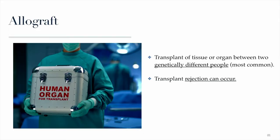The type of transplant you're most likely familiar with is called allografts. Allografts are transplants in which you have a donor and a patient who are genetically different — sometimes a complete stranger, sometimes a sibling. The donor donates an organ and the patient receives it. This is the type of transplantation where rejection can occur, because these are not the patient's own body tissues.